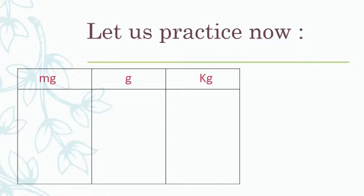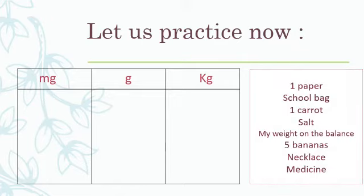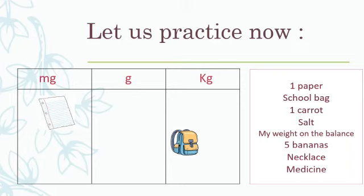Let us practice now. We have a table with three columns: milligram, gram, and kilogram. We are going to put these objects under the correct unit of measurement. First, one paper — the mass of one paper is very, very light, so we put it under milligram. The mass of a school bag is very big, so we put it under kilogram. The mass of one carrot is light, so we put it under gram. The mass of salt is also light, so we put it under gram. My weight on the balance is large and big, so we put it under kilogram.